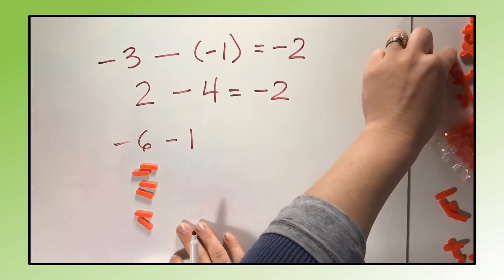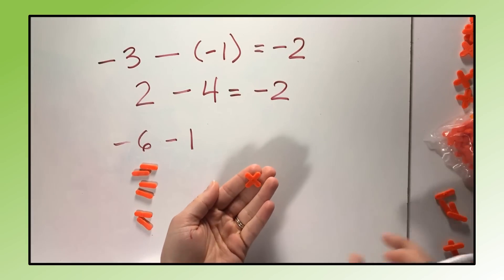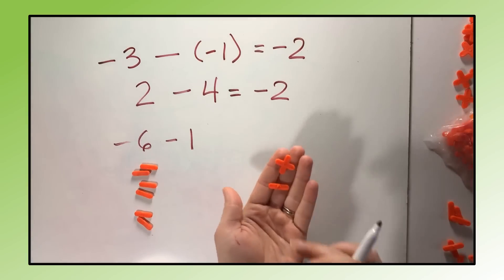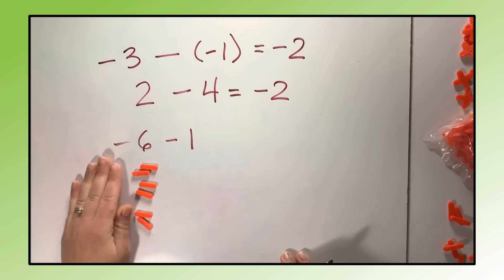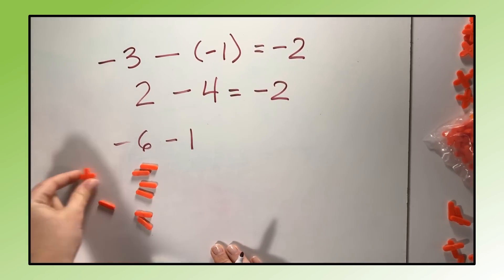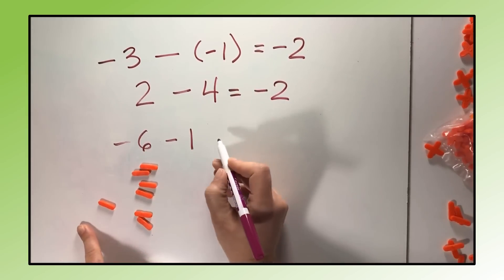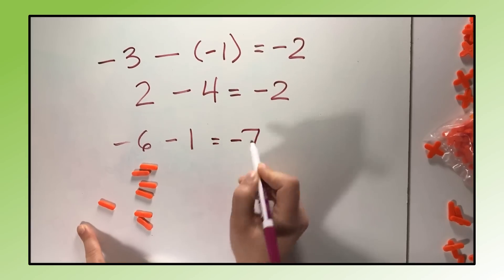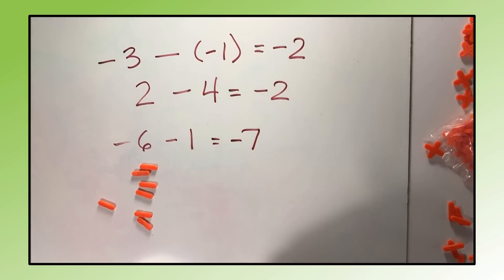So I can put a zero pair in here, and now I do have one positive that I can take away. Look what we're left with: seven negatives. Negative seven is the answer.